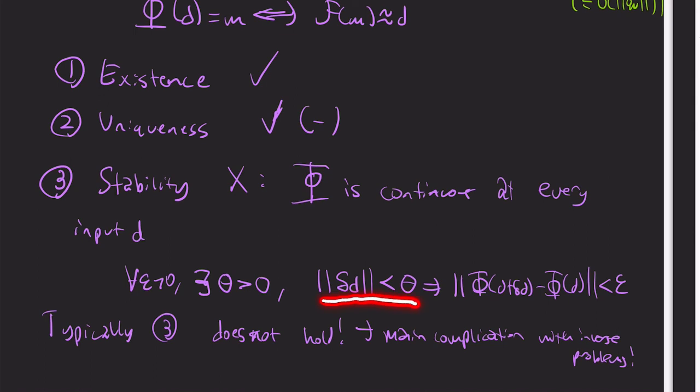So this continuity basically says we typically violate this condition. So this says small perturbations in the input space, where the input is the data that we input.